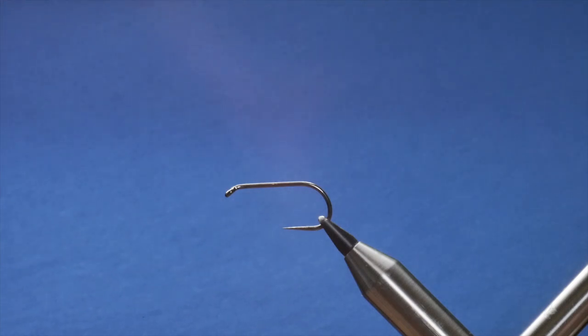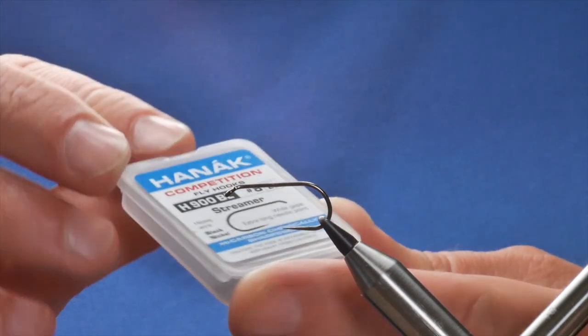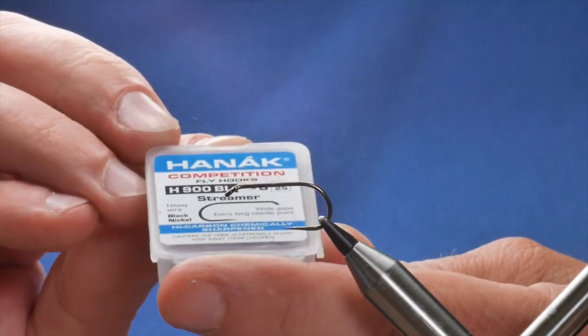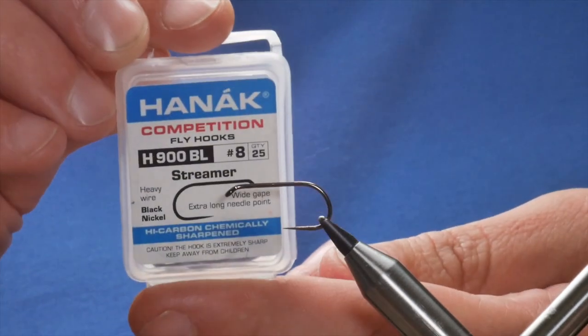So I'm going to tie a Zonker variation and what I have in the vise is a Hanak H900 streamer hook at size 8.